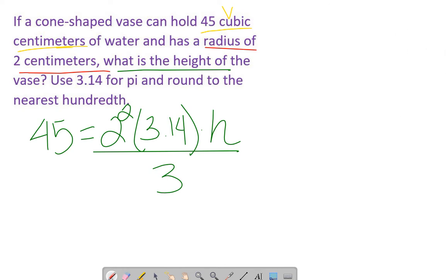Let's simplify this. The 45 stays as is. We can clean this up a bit. Four times 3.14 is 12.56. So this gives us 45 equals 12.56h divided by 3.